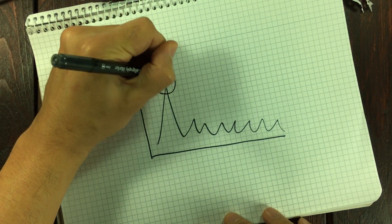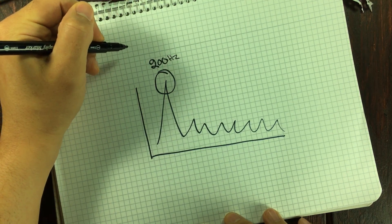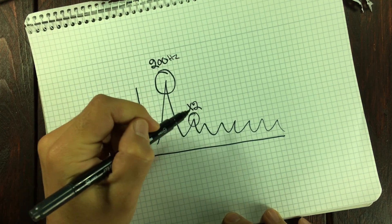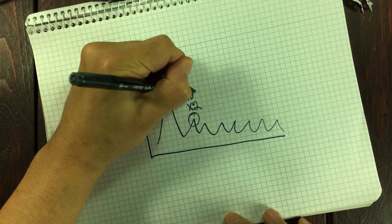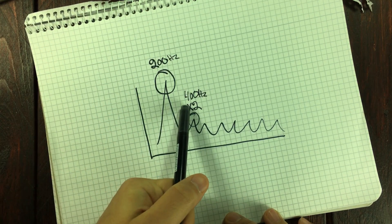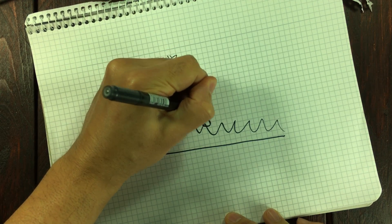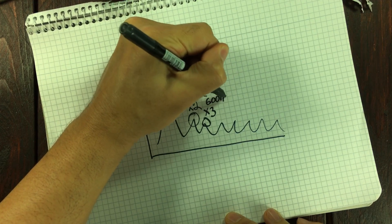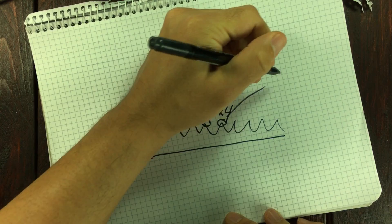If your fundamental frequency is at 200 Hz, then that's your first harmonic. When you add overtones, you begin counting at 2. The second harmonic is a multiplication of the first fundamental: if the fundamental is playing at 200 Hz, then the second harmonic will be 400 Hz. For the third harmonic, you multiply the first one three times and get 600 Hz. For the fourth added harmonic, you multiply the fundamental frequency four times.